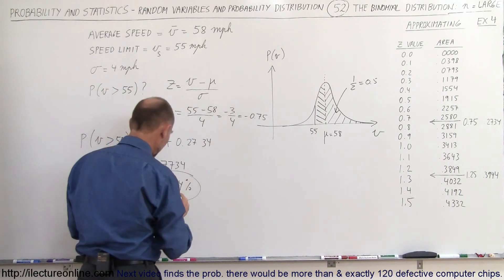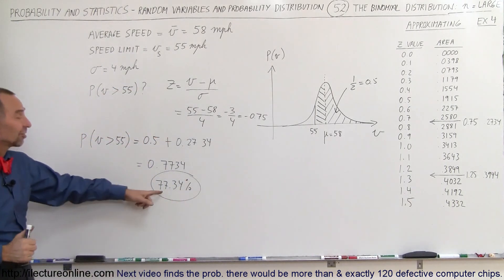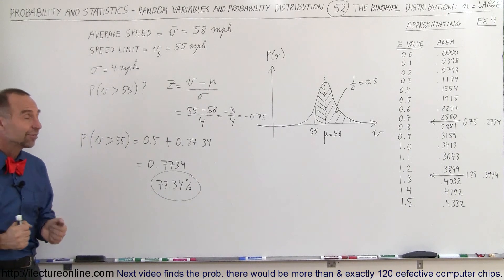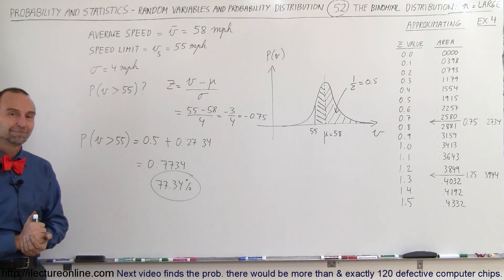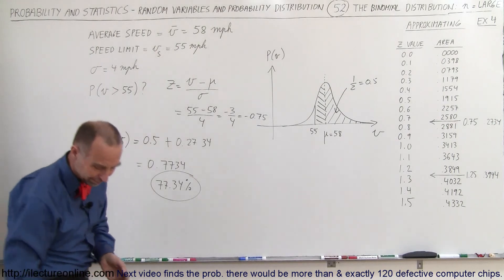That's the probability that you'll find a car driving faster than the speed limit, and that's how we do that. Thank you.